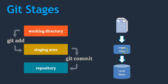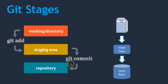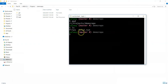We have files in the working area. Now we need to add those to the index area, also called the staging area — both refer to the same thing. To add files from the working directory to the staging area, we execute the command 'git add'. Once files are available in the staging area, we then execute 'git commit' to add them to the local repository.